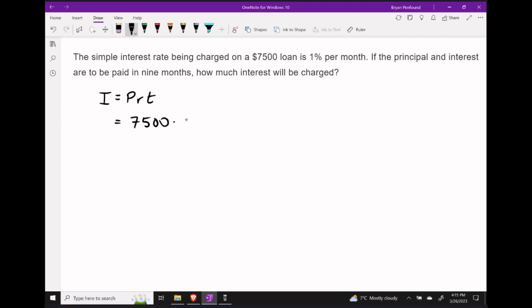Our loan is being charged at 1% per month. This means if we multiply this value by 12, we get the annual rate. The annual rate is 12%.